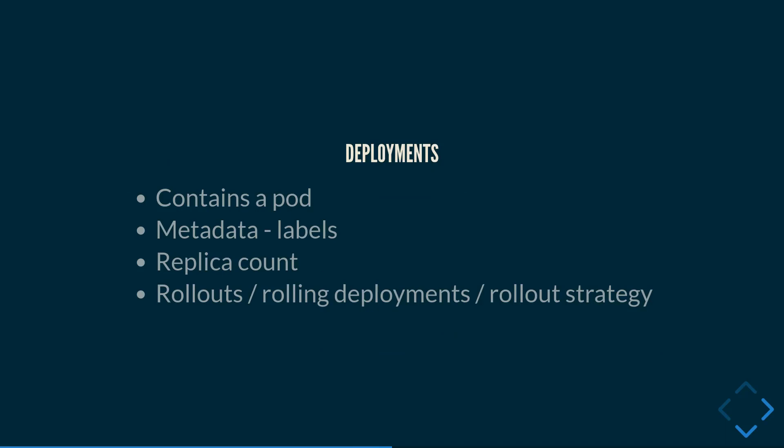Moving on — how do you actually get pods deployed? That is done through deployments. A deployment basically contains a pod and has additional metadata such as labels. It also has a replica count attached to it, which defines how many sets of pods should be run. Once you have a deployment defined, you can tell Kubernetes to spin up that deployment.